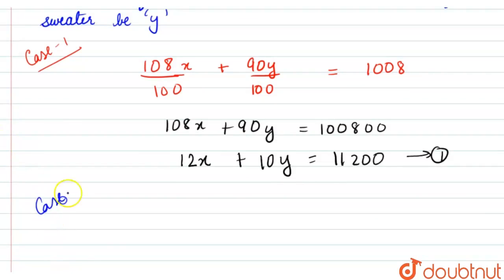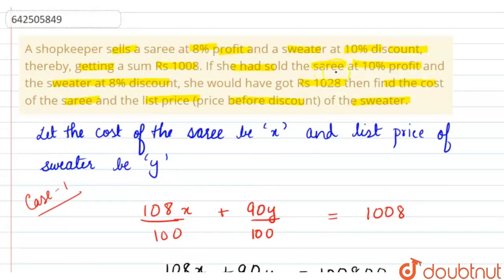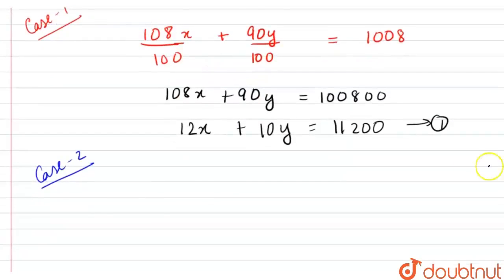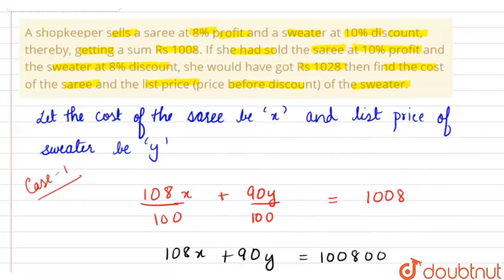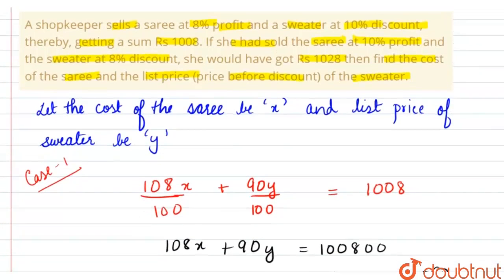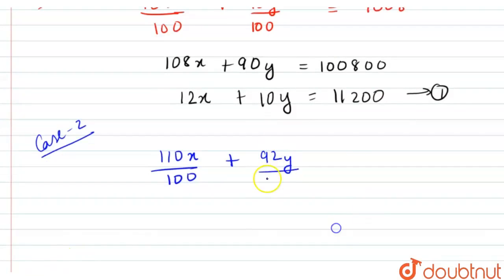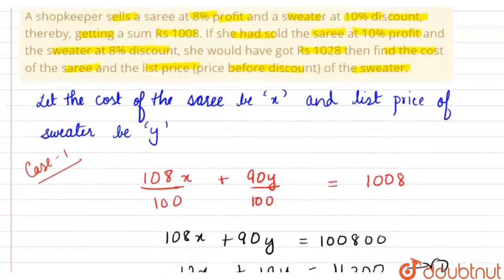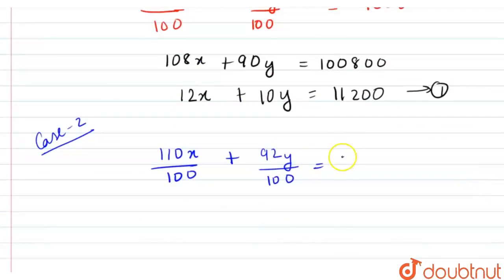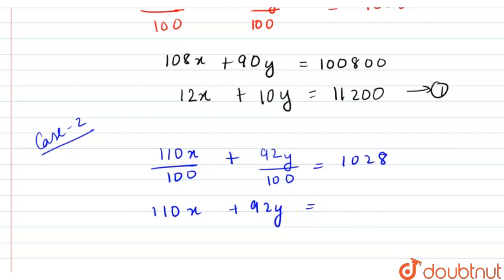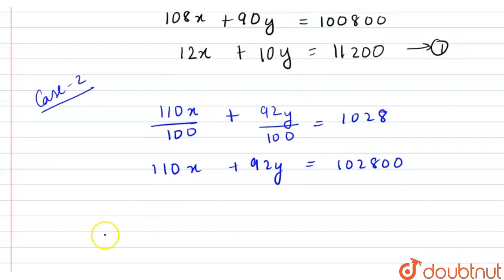Case 2: the shopkeeper is selling the saree at ten percent profit and the sweater at eight percent discount. Ten percent profit gives 110x/100. Eight percent discount gives 92y/100. The total the shopkeeper earns is rupees 1028. Multiplying both sides by 100: 110x + 92y = 102800.